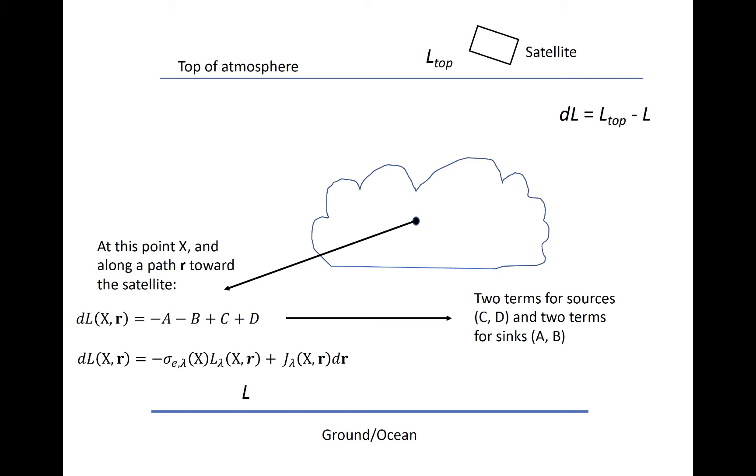We will expand on this a little bit using the second equation shown here. Now, dL is displayed as only two terms, the first of which is the total sink, while the second is the total source.